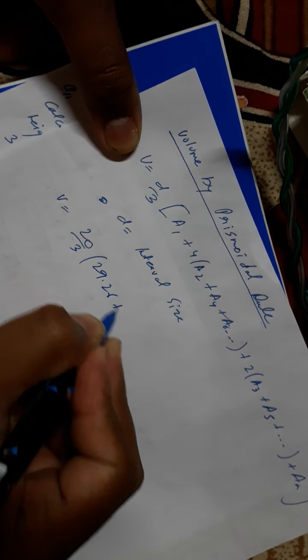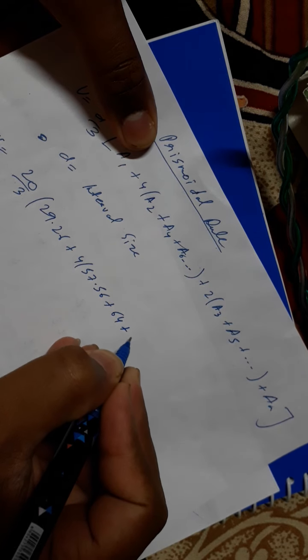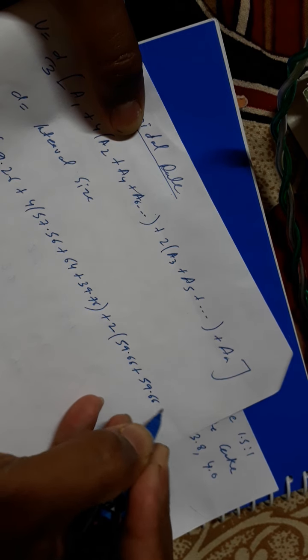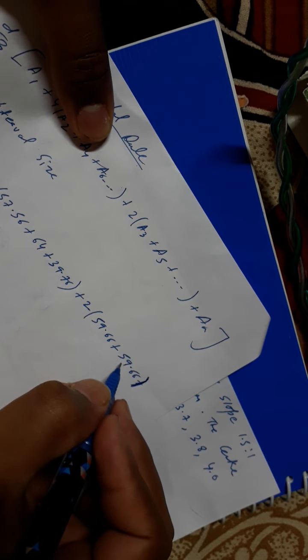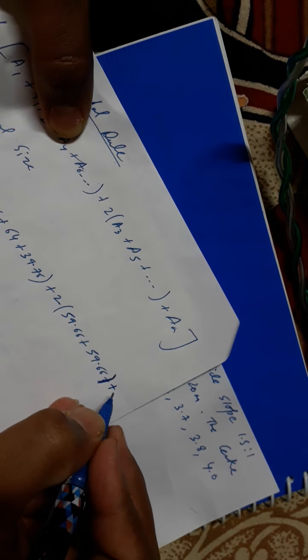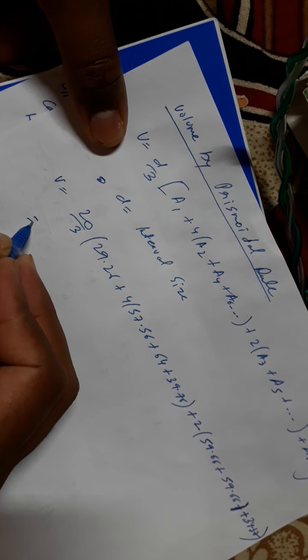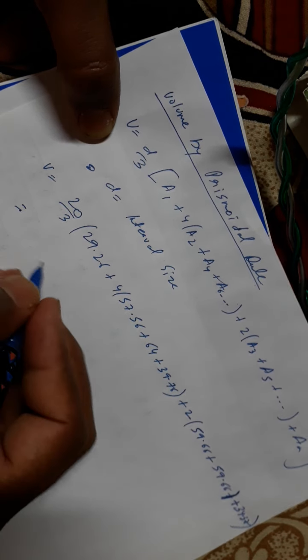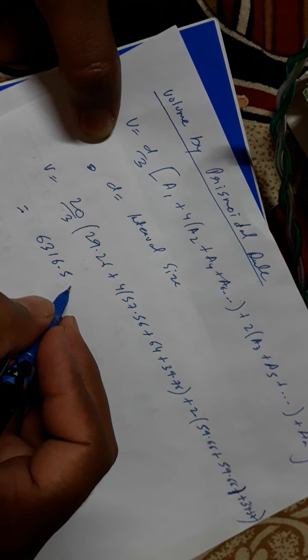A1, A1 we calculate it. Only two values, A3 and A5, we calculate it. This is the last value, this will be outside the bracket, so this will be 34.37. So you calculate by yourself. This is very simple calculation. You can do it by yourself. So we have calculated this value as 6316.5 meter cube.